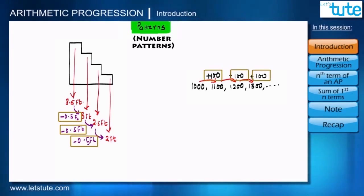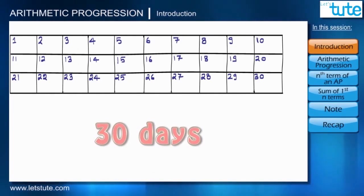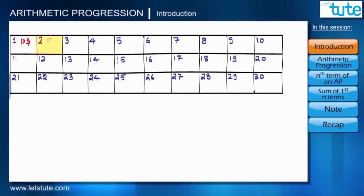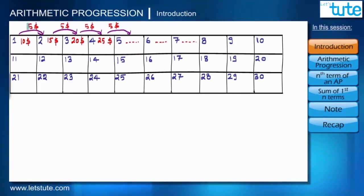Let me share a fresh example. I have a new project and must complete it within 30 days. The payment pattern is: on the first day I get $10, on the second day $15, on the third day $20, on the fourth day $25, and so on. The succeeding payment is incremented by $5. You can consider this table as the month of November, where every number is increased by $5.